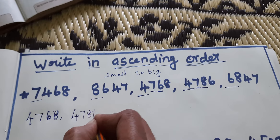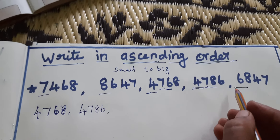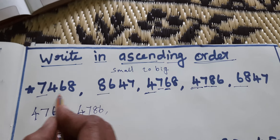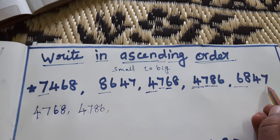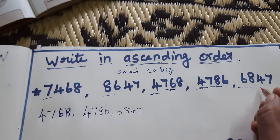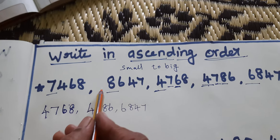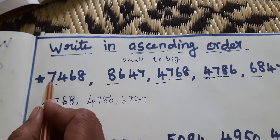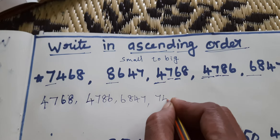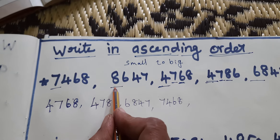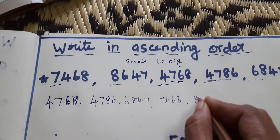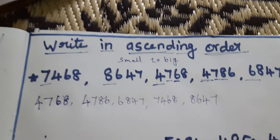Next, looking at 6000, 8000, 7000 — which one is the smallest number? 6847. Then between 7000 and 8000, which one is smallest? 7000. So 7468 is next, then last one: 8647.